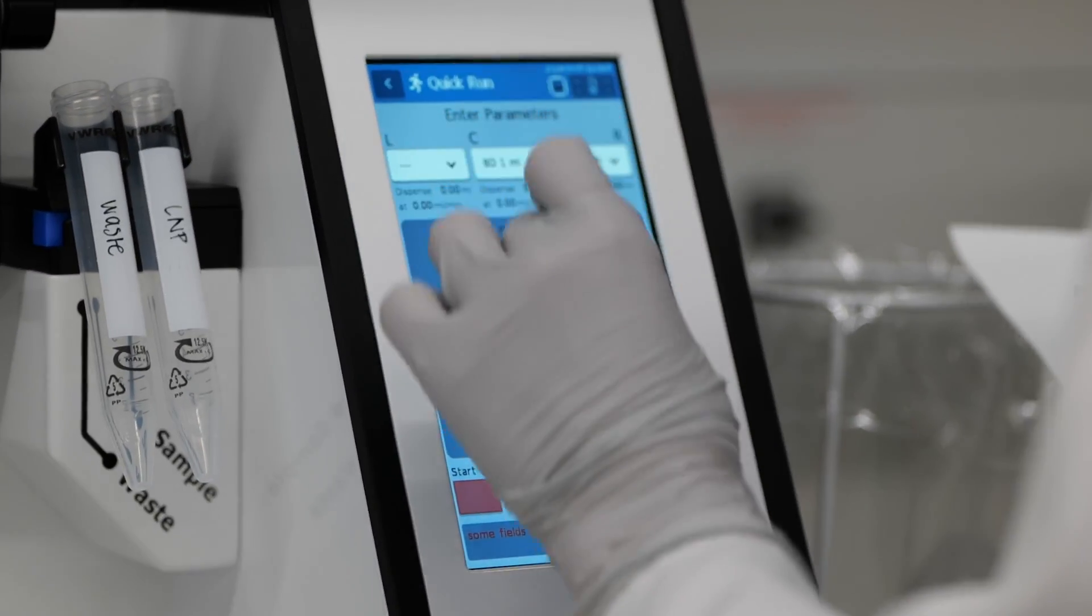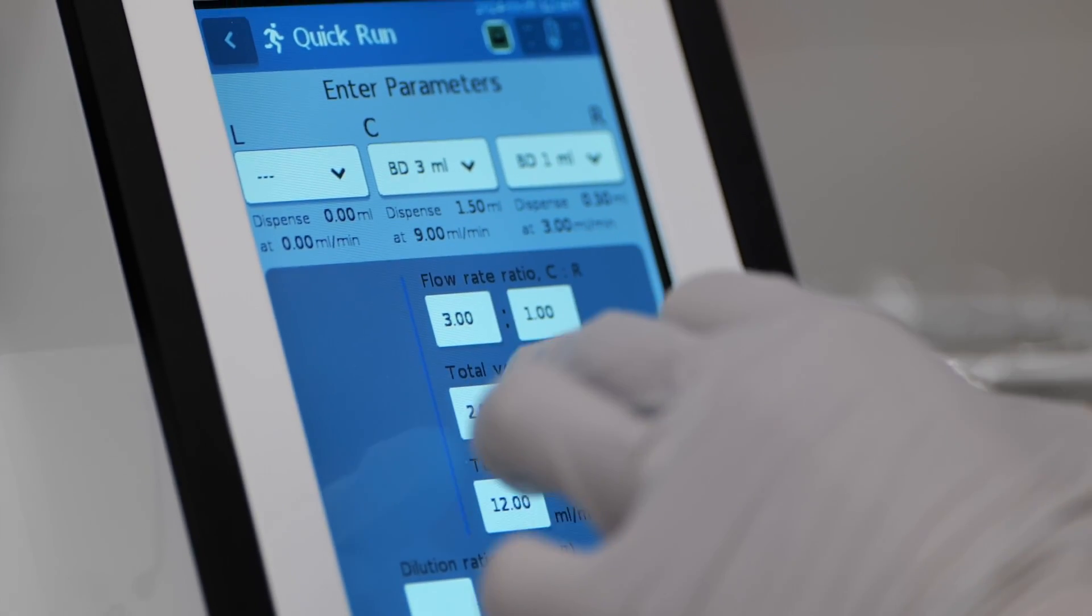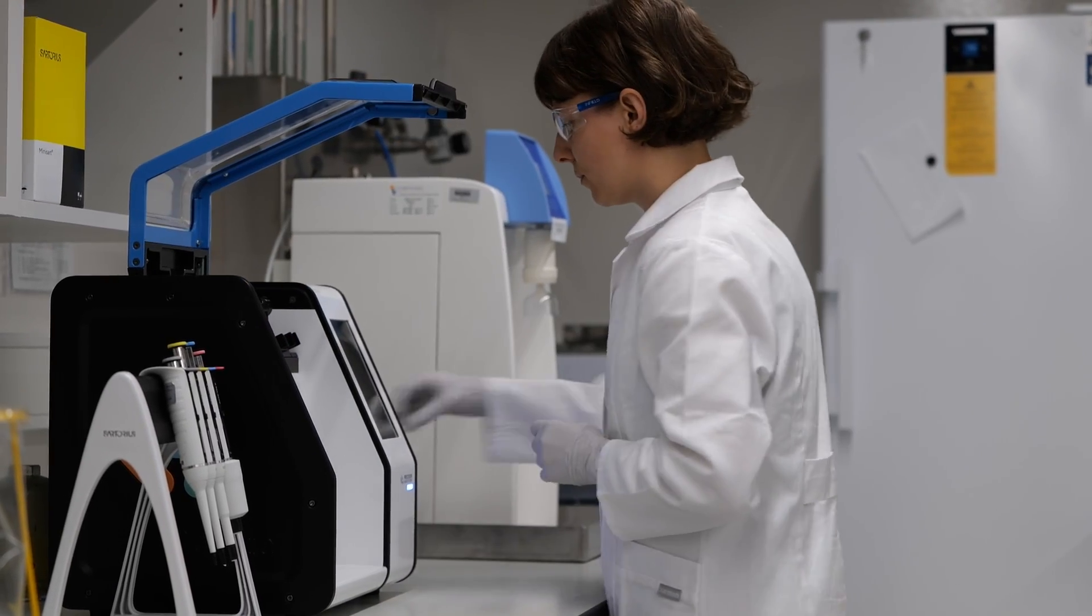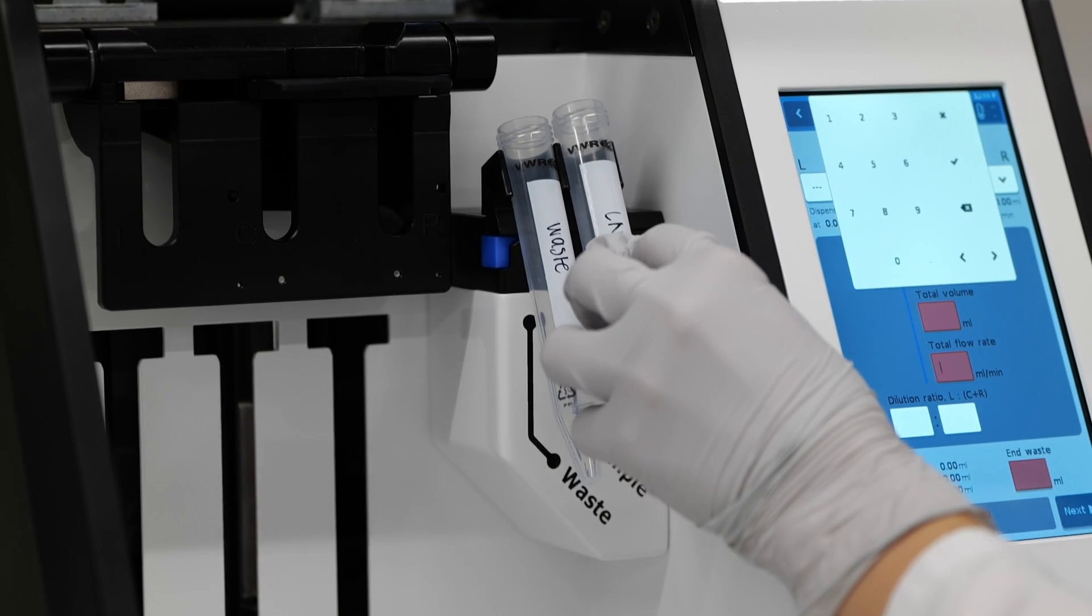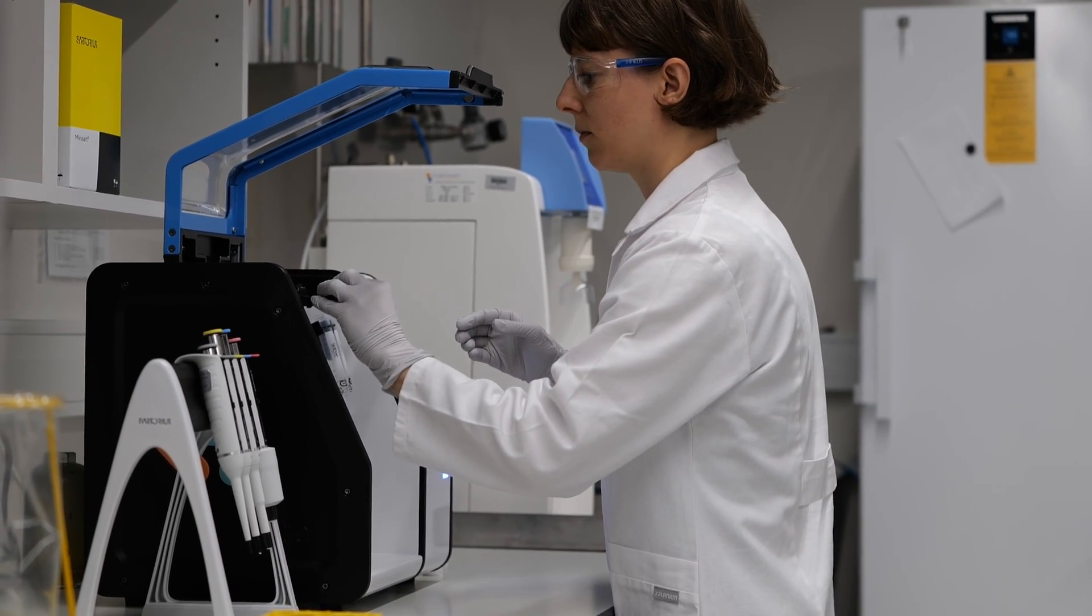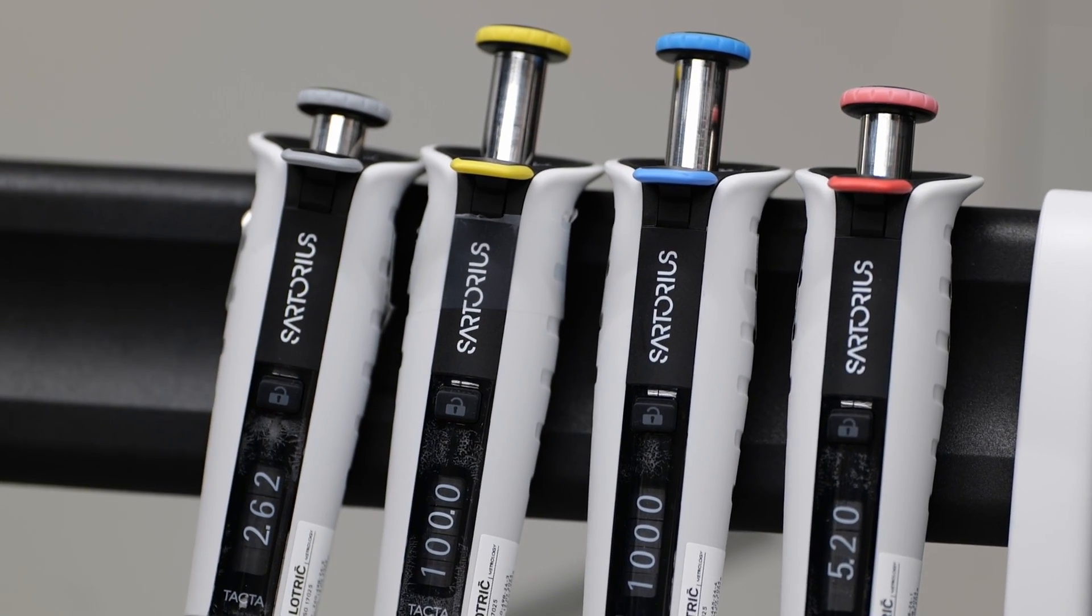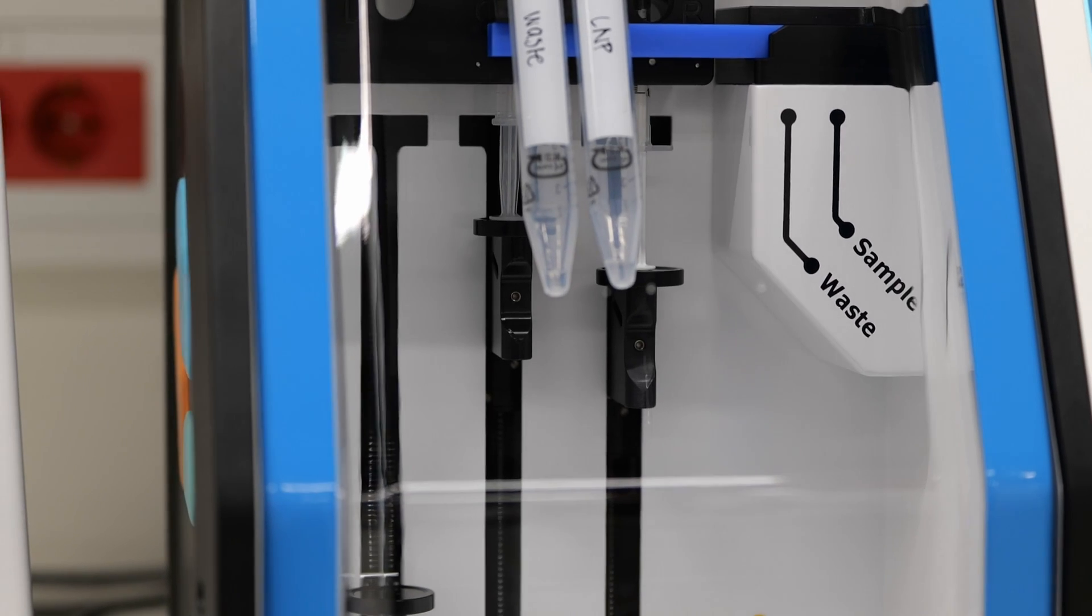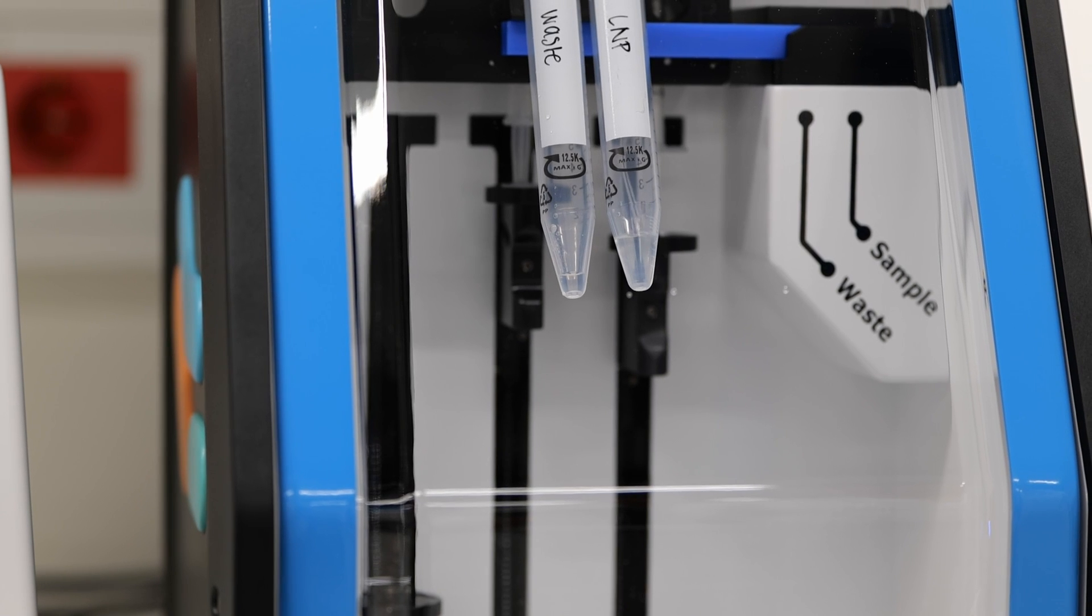LMPs are manufactured by mixing lipids dissolved in an organic solvent with an aqueous solution containing a nucleic acid. This process is typically carried out using microfluidics. LMPs are then diluted and buffer exchanged to physiological aqueous buffer to remove the remaining organic solvent. It is essential to thoroughly characterize the final concentrated LMP sample before proceeding with further use to ensure it has the intended properties. One of the key indicators of LMP quality is encapsulation efficiency.